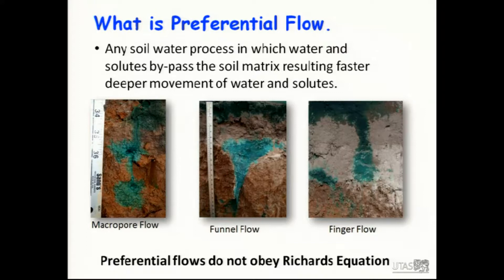Here are three examples from my site. Macropore flow — this is flow down an ant nest, you can see the dye tracer. Funnel flow, literally in the shape of a funnel, where ferric boundaries influence the direction and concentration of flow. And finger flow, which results primarily from water repellents.